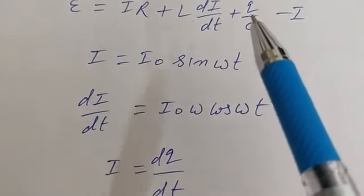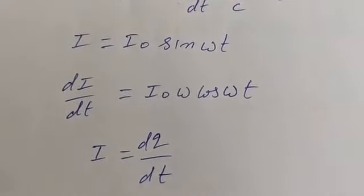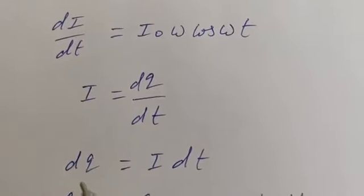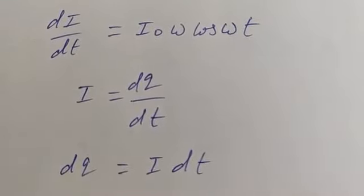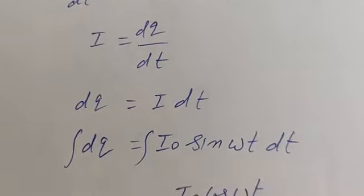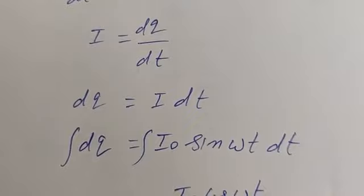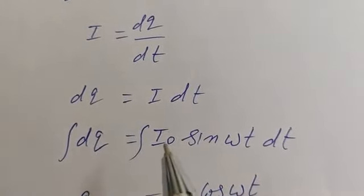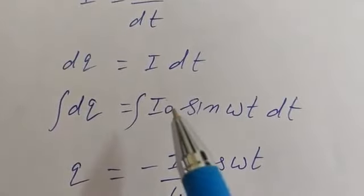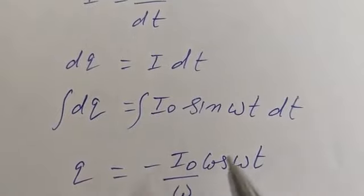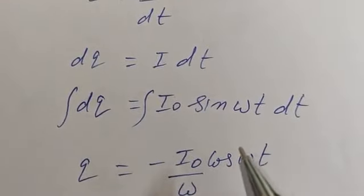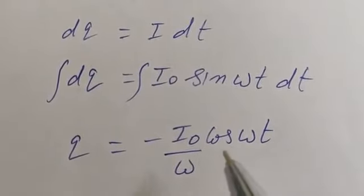Now we know I and dI/dt. To find Q, we use I = dQ/dt. Cross-multiplying, dQ = I dt. Integrating both sides, Q equals the integral of I₀ sin(ωt) dt. Since the integration of sin(ωt) is −cos(ωt)/ω, we get Q equals −I₀/ω · cos(ωt).